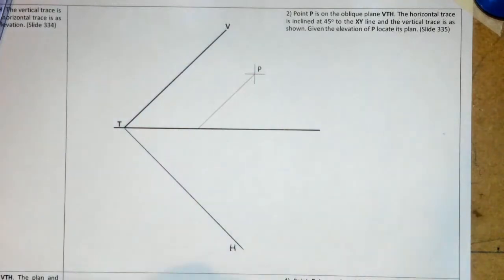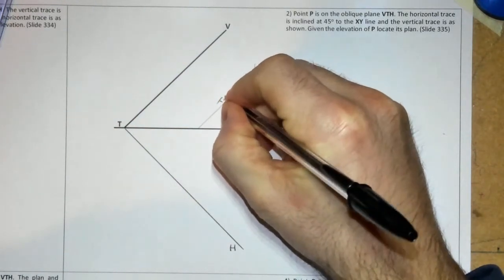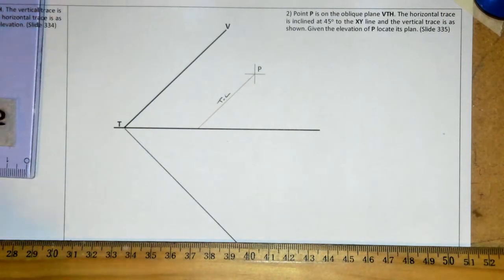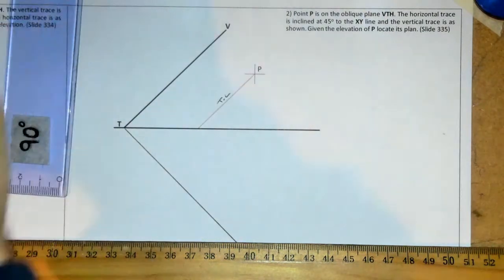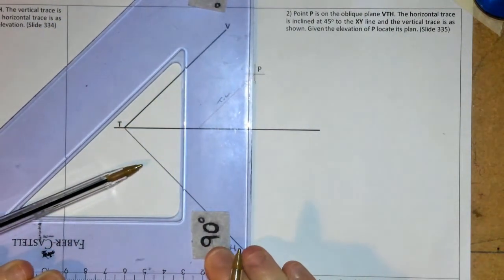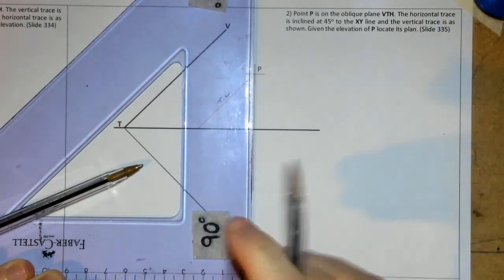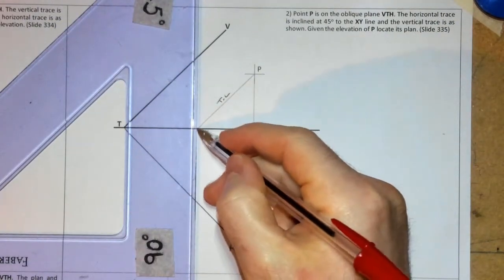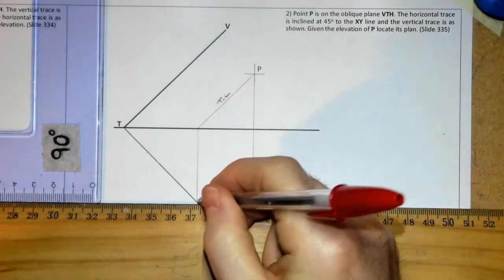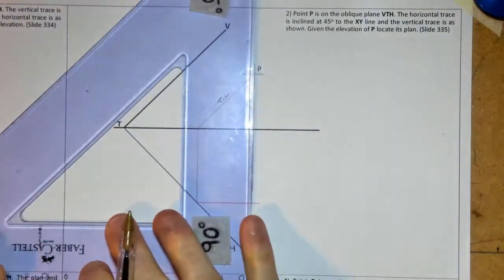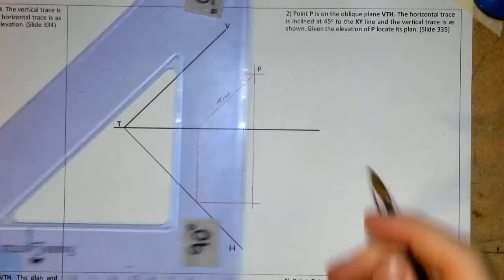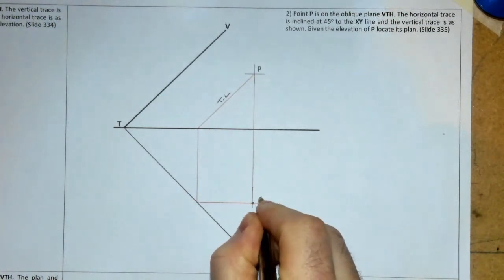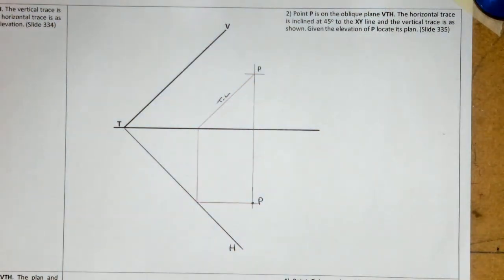That vertical cut is a true length in one view, so it will be parallel to the XY line in the other view. We project P straight down — we know P must be somewhere directly below in our plan view. Where it hits the XY line, project down to the horizontal trace, then project across to get the cross. That is how you locate P in our plan view — very similar to question one, just the opposite way around.